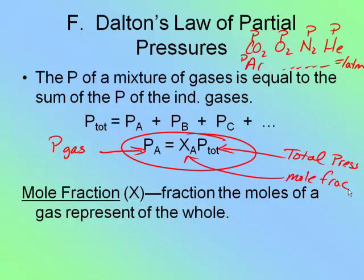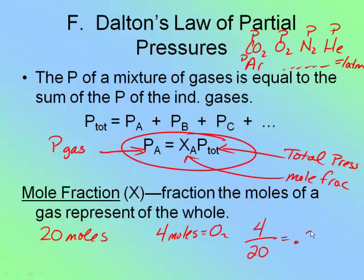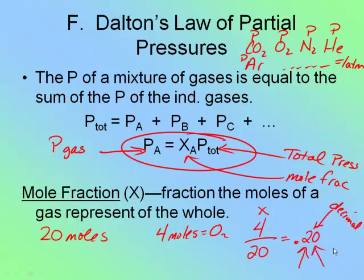For example, let's say I had a total of 20 moles of gas, and oxygen represents 4 moles of that 20. How do I find mole fraction? Simple: 4 divided by 20 equals 0.20. Something you need to know about mole fraction — notice it's not written as a fraction, it's a decimal. That's the key to mole fractions. You never write it as a fraction; you always write it as a decimal, which makes the math a lot easier.